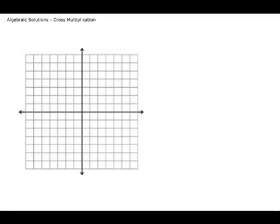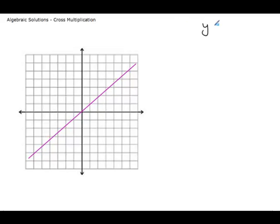Before I start with our discussions on cross multiplications in linear equations, let me give a small overview of something which will come up later in the lecture. If you have a line, any line, then there are in fact an infinite number of points on these lines which are basically solutions of this line. For example, if y is equal to x is the line, this line you have,